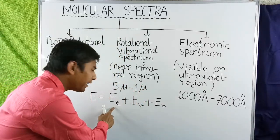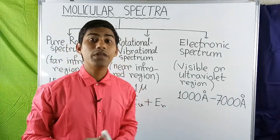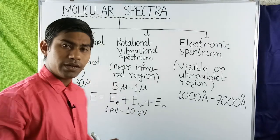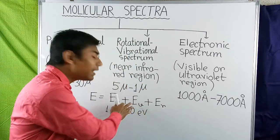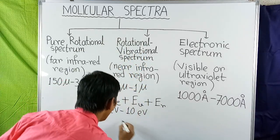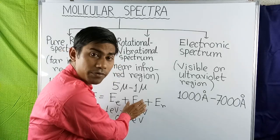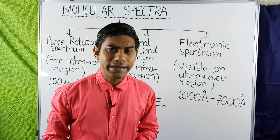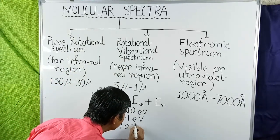The electronic energy levels in a molecule are separated by energy intervals of the order of 1 eV to 10 eV. Each electronic energy level may have a number of vibrational energy levels, which are separated by energy intervals of the order of 0.1 eV. Each vibrational energy level may in turn have a number of rotational energy levels, which are separated by energy intervals of the order of 10⁻³ eV.